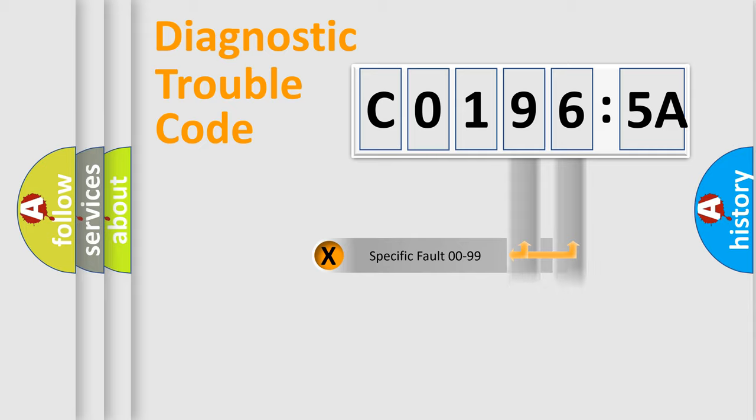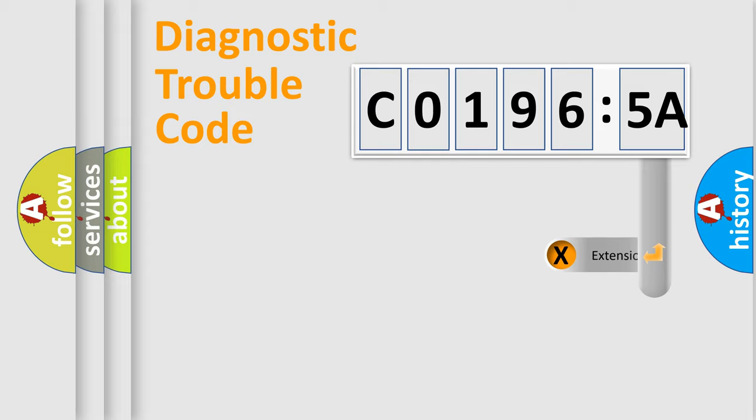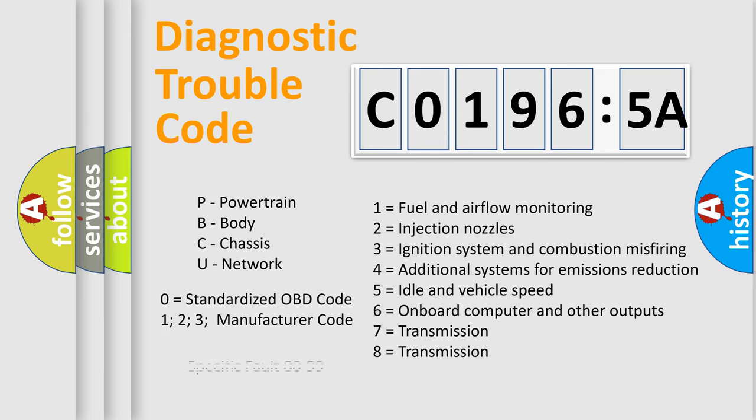Only the last two characters define the specific fault of the group. The add-on to the error code serves to specify the status in more detail. For example, a short to the ground. Let's not forget that such a division is valid only if the other character code is expressed by the number zero.